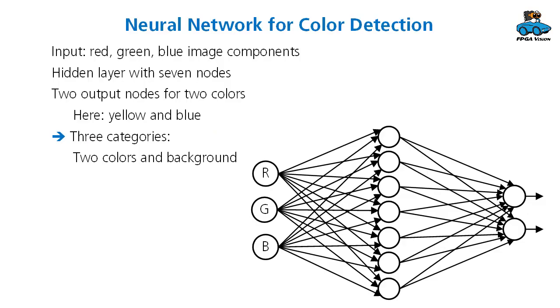We designed a neural network for that application and that network uses three input values, red green blue value of the video stream. It has seven hidden nodes and two output nodes. The two output nodes indicate yellow and blue color. And when none of these output nodes is active we have a third category which is background. So no color detected.